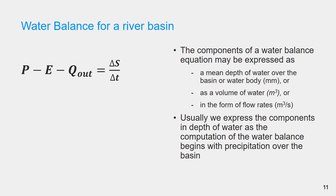We have seen that the components of water balance for a river basin are precipitation, evapotranspiration, runoff from the basin, and change of water storage within the basin. These components may be expressed in three different units. They can be as mean depth of water over the basin area in millimeters of water depth, or as total volume of water in cubic meters, or as flow rates in cubic meters per second.